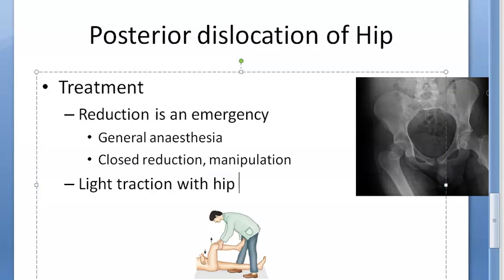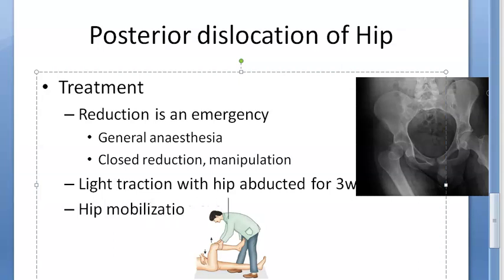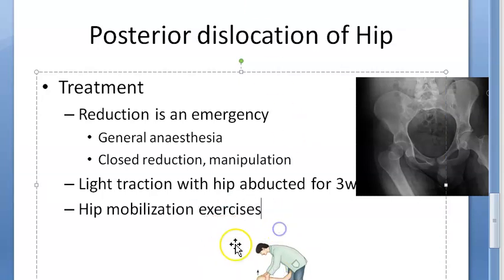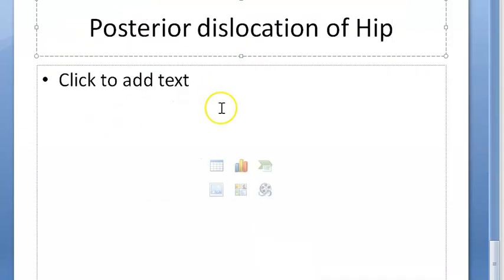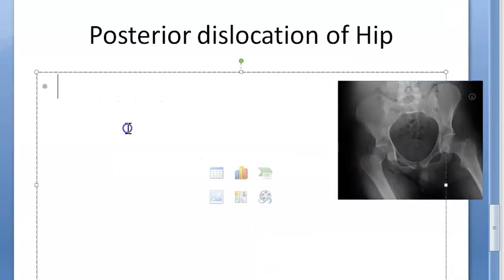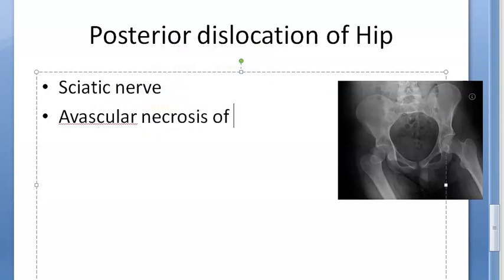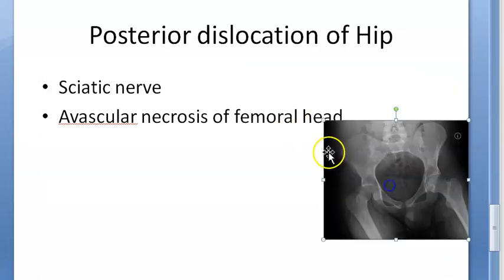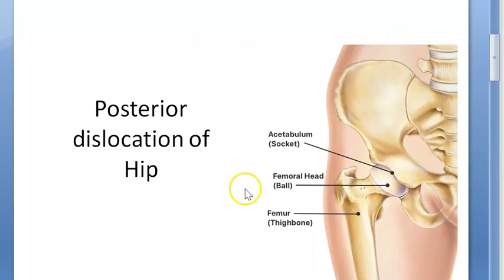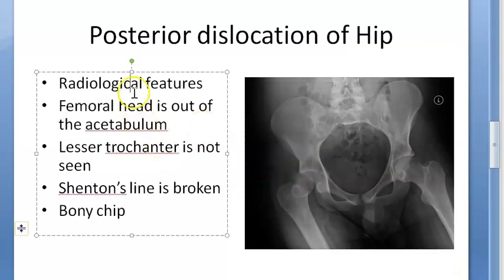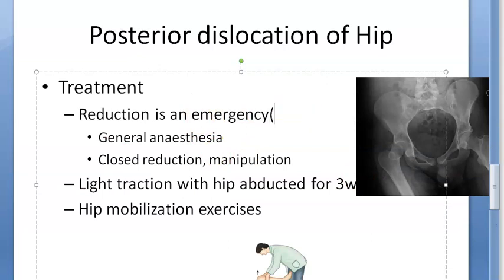Now, what are the complications of posterior dislocation of hip? First, sciatic nerve injury can occur, but it is mostly a neuropraxia and will recover spontaneously. However, if the sciatic nerve is severely damaged, the prognosis is poor. Second, avascular necrosis of the femoral head — if the femoral head is out of the acetabulum, it can go into necrosis. This is why reduction is an emergency.